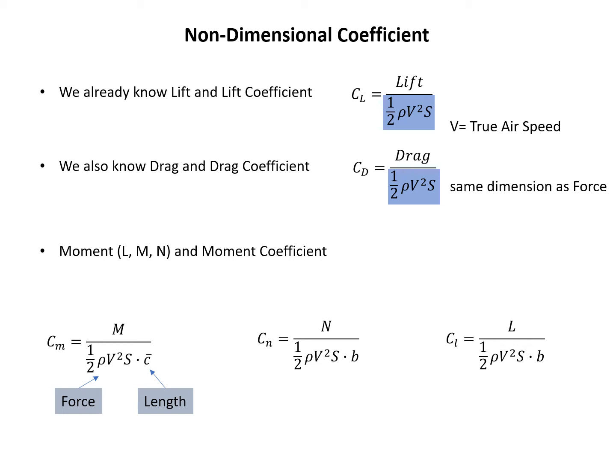The question is why we use b or c̄ in the denominator, or when we use b as the characteristic length for the moment coefficient non-dimensionalization. The answer: CM is about the longitudinal motion around the y-axis, so c̄ should be the characteristic length because it's along the longitudinal axis. But for CL and CN, they concern the aircraft's lateral-directional motion, and b is along that direction — that's the wingspan — so we use b as the characteristic length in the denominator for CL and CN.